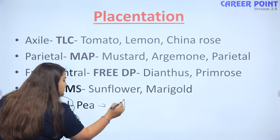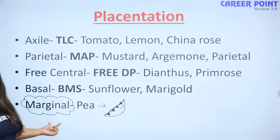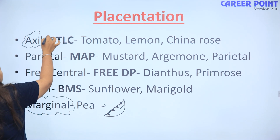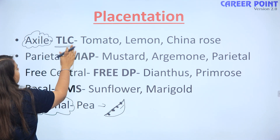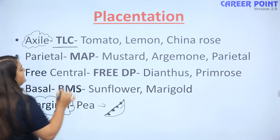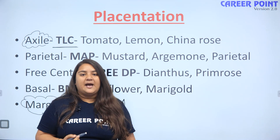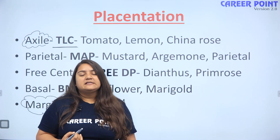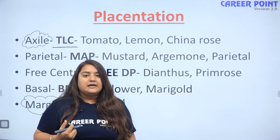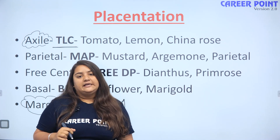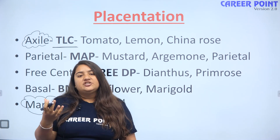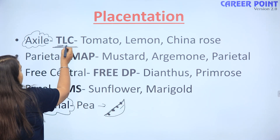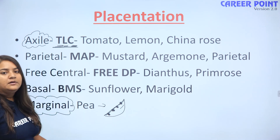Marginal placentation ke paas margin pe hoti hai, isliye marginal P mein hoti hai. Ab axile se hum yaad rakhenge TLC — T se tomato, L se lemon, C se China rose. TLC — total lung capacity ya total leukocyte count — dono options diye hain yaad rakhne ke liye.